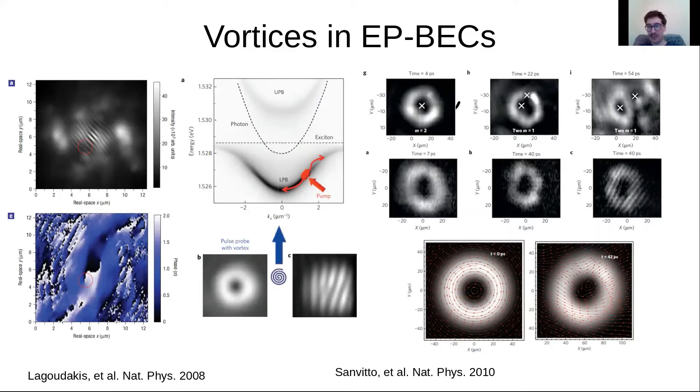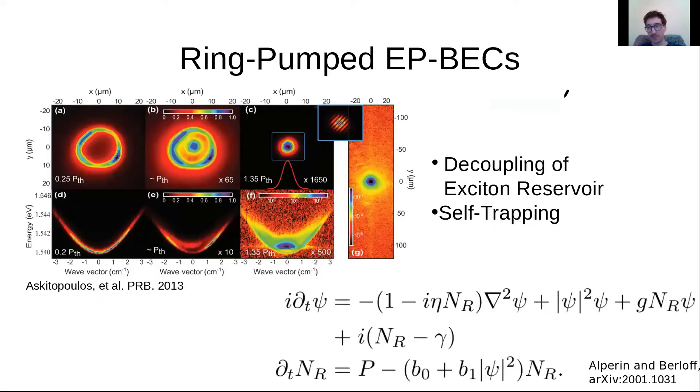Before we get into our results, I want to mention, as was brought up quite nicely in the end of the last talk, that you can have a pump profile which is actually spatially separated from the point of condensation. In this experiment, you can see a ring pump profile actually causes a condensation—the condensate forms within it. So here there's actually a decoupling between the reservoir equation and our condensate equation. This is going to be quite important for us here.